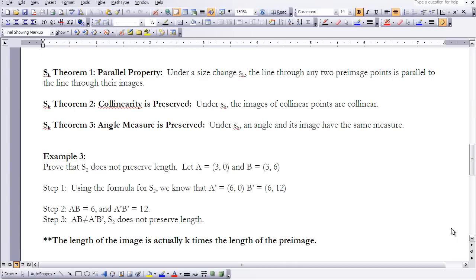So we discovered that segments, image and pre-image segments, appear to be parallel. We also looked at distance. The distance relationship seemed to have a relationship the same as the size change value that we looked at or the magnitude of the size change. We have some theorems or properties that we want to look at. So the SK theorem, one, is called the parallel property. And what that theorem says is that under a size change, the line through any two pre-image points is parallel to the line through their images. The second theorem is that collinearity is preserved. So if points were collinear in the pre-image, then we know that they're going to be collinear in the image. And then the last one that we want to look at is angle measure is also preserved. So an angle in a pre-image is going to be the same as an angle in the image. So there will be a correspondence there.